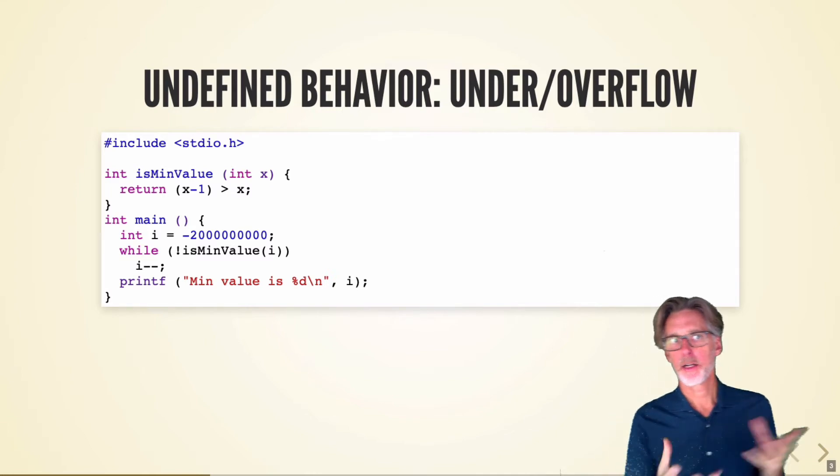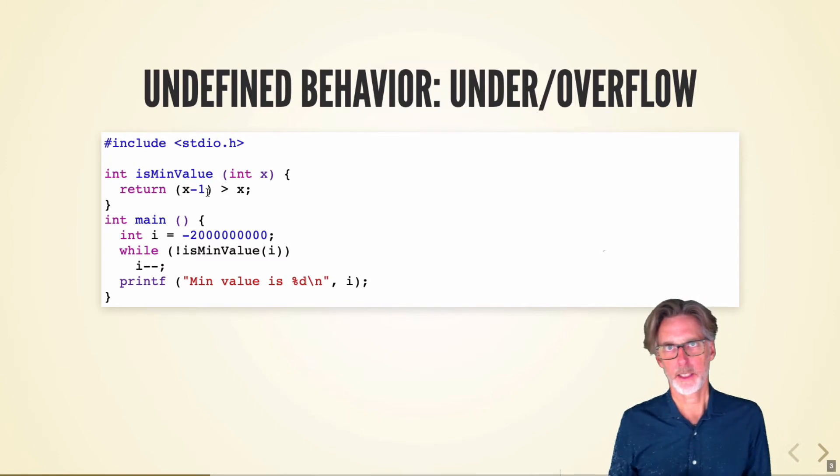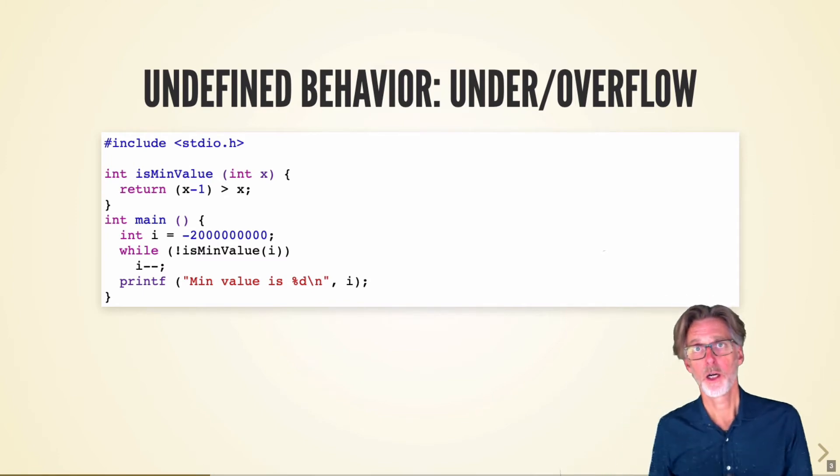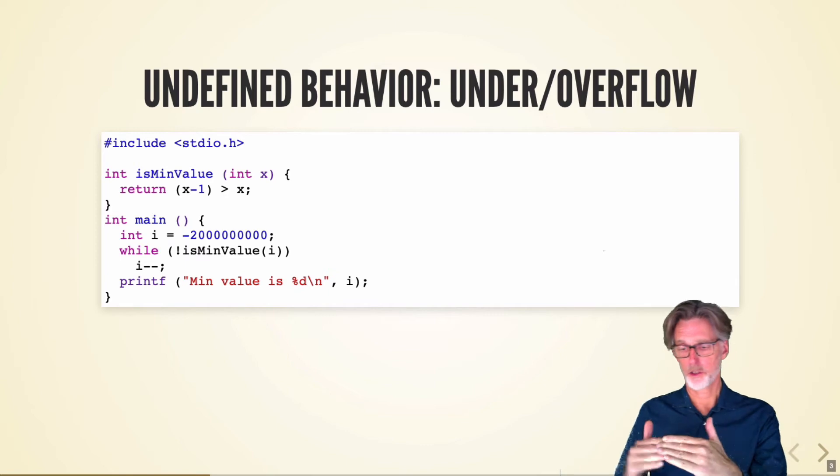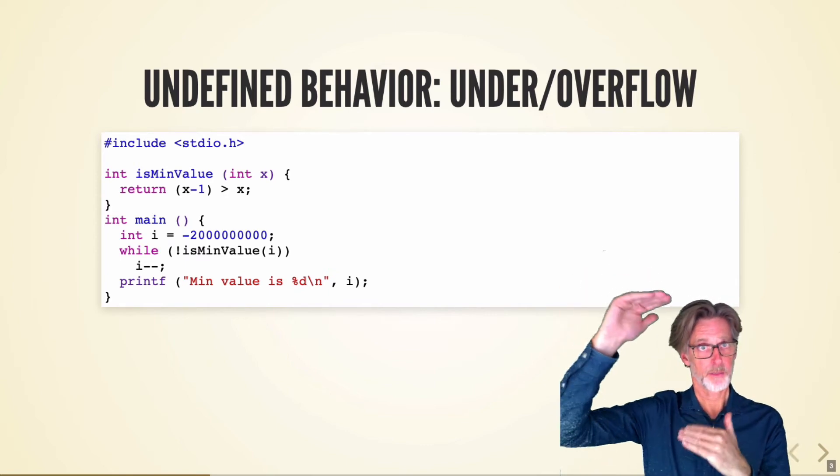I have a function which will determine whether or not something is the minimum possible value. If you remember the implementation of integers, they're implemented by two's complement, and therefore when you hit the smallest integer, if you subtract one from that, you'll wrap around and you'll end up with something larger.